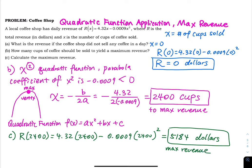If you are doing business analysis for this coffee shop, you have to tell the owner that you need to sell 2,400 cups of coffee every day to maximize your revenue. The owner will ask, what is my revenue then? You say, if you're able to sell that many cups, then your maximum revenue is $5,184.